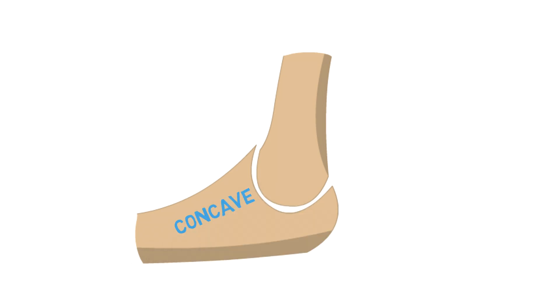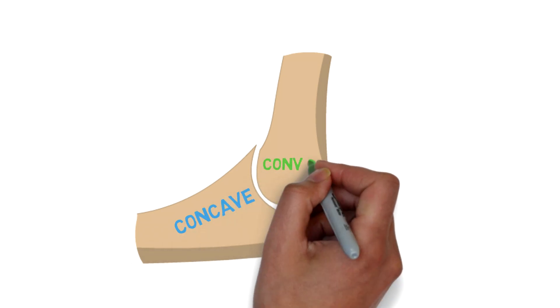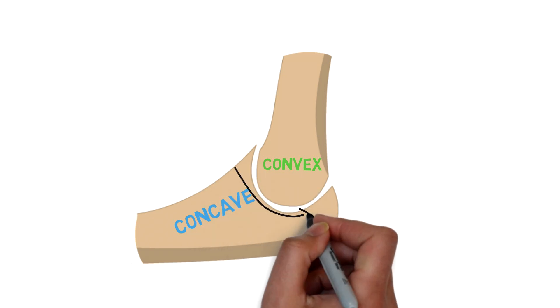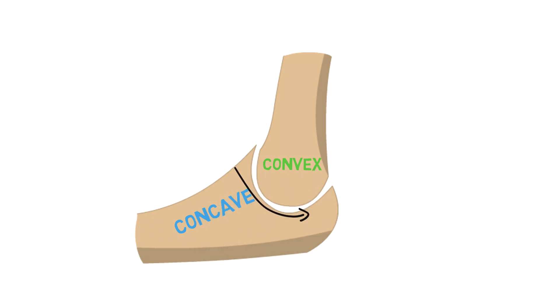Here's the concave surface, and this is the convex surface. I find it easier to differentiate by thinking of the concave surface as the surface caving in.